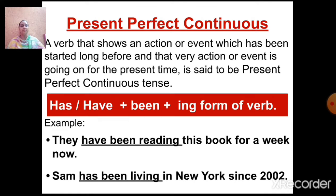Now let's quickly revise present perfect continuous tense. A verb that shows an action or event which has been started long before and that very action or event is going on at the present time is called present perfect continuous tense. The formula is: has or have plus been plus ING form of verb. We use 'has' with singular subject and 'have' with plural subject. For example: 'They have been reading this book for a week now.' Since 'they' is plural, we use 'have' plus 'been' plus ING form of verb, that is 'reading'.